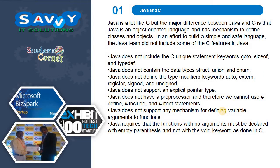The first topic is Java and C. Java is a lot like C, but the major difference between Java and C is that Java is an object-oriented language and has a mechanism to define classes and objects. In an effort to build a simple and safe language, the Java team did not include some of the C features in Java. Java does not include the C unique statement keywords: goto, sizeof, and typedef.